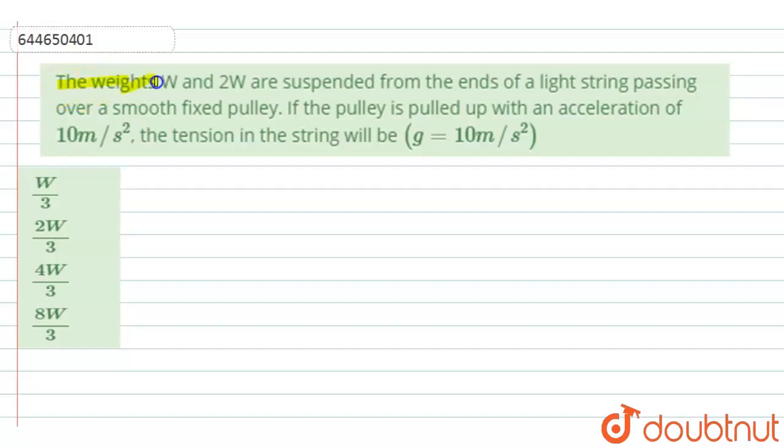The given question is: The weights w and 2w are suspended from the ends of a light string passing over a smooth fixed pulley. If the pulley is being pulled up with an acceleration of 10 meter per second square, the tension in the string will be. We have to take the g, that is acceleration due to gravity, equals to 10 meter per second square. And the given options are w by 3, 2w by 3, 4w by 3, and 8w by 3.